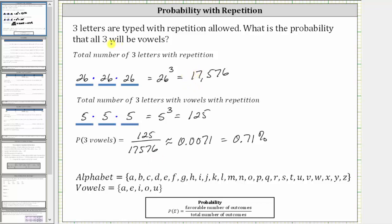I also want to mention we can find this probability by thinking of typing the three letters as three independent events and multiplying the probabilities of each event. For example, the probability of typing a vowel for the first letter is five out of 26, or 5/26.